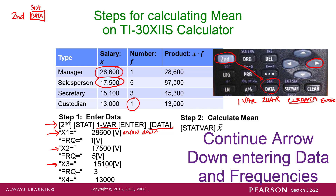X4 is going to be 13,000. If you want to, you can arrow down — there's only a frequency of 1 though. So now our data is entered. You do not have to push Enter.